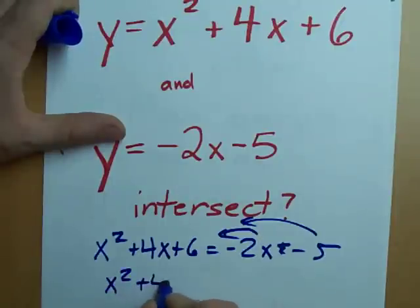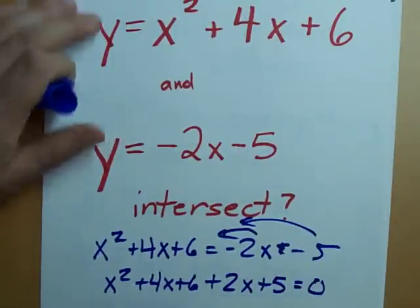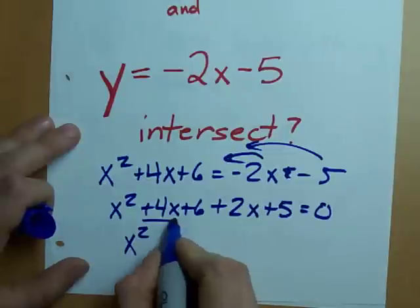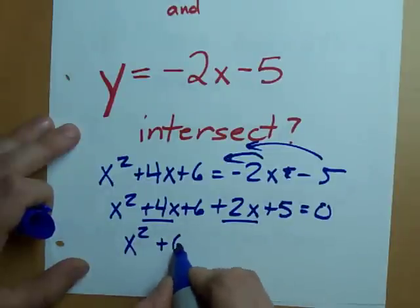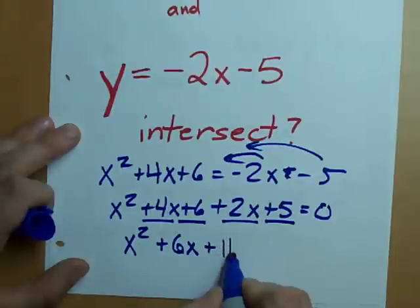x squared plus 4x plus 6. Now we have plus 2x and plus 5. We're left with 0 on the right. We can simplify that a little bit because 4x and 2x make 6x and 6 and 5 make 11.